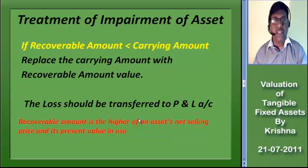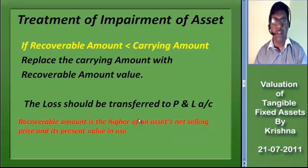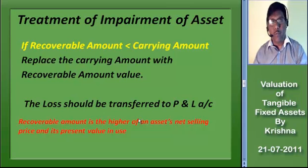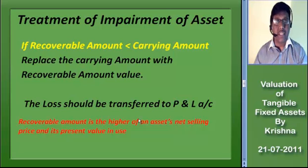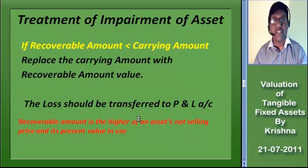Now we shall see how the impairment of an asset is given accounting treatment as per Accounting Standard 28 and IAS 36. When the recoverable amount of an asset falls below its carrying amount, the carrying amount has to be reduced to the recoverable amount, and the loss on impairment should be charged to the profit and loss account in addition to the depreciation. Carrying amount is the amount carried in the balance sheet. Recoverable amount is the higher of an asset's net selling price and its present value in use. If the recoverable amount is equal to or more than the carrying amount, no impairment loss is accounted for and the asset is not impaired.